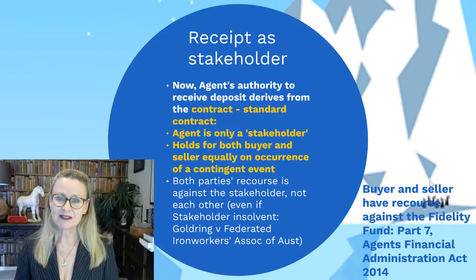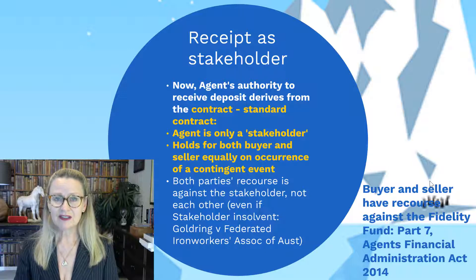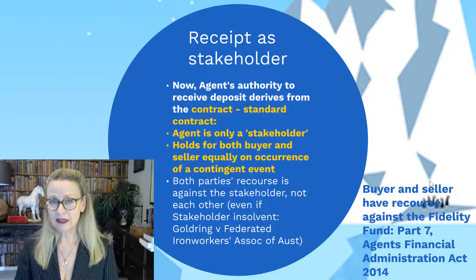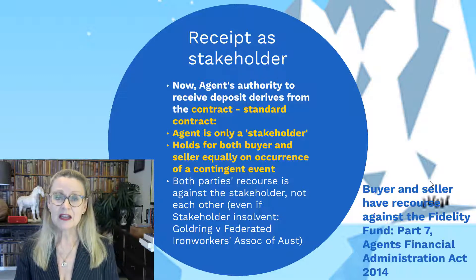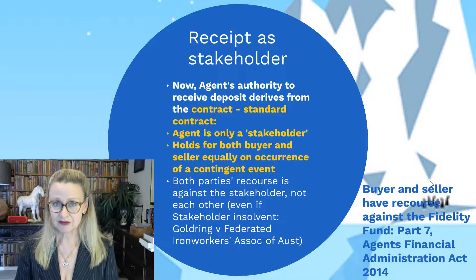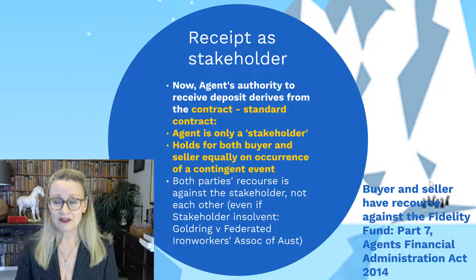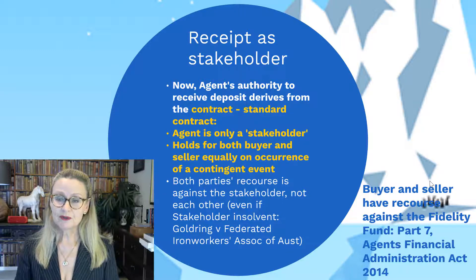Generally speaking nowadays, certainly under the standard contract, we have the agent designated as a stakeholder. That means the stakeholder acts equally for the interests of the buyer and the seller, holding that money only up to the occurrence of a contingent event. Both parties' recourse in the event of something going wrong is against the stakeholder, not against each other. So even if the stakeholder goes insolvent, the only action either party will have is against that stakeholder — they'll have to take a ticket and get in line behind all other creditors to the now-bankrupt stakeholder. The other alternative is to look to recourse from the fidelity fund.